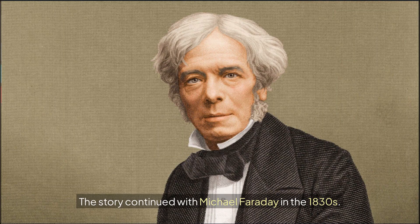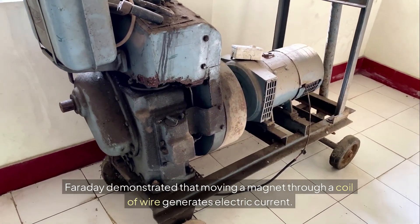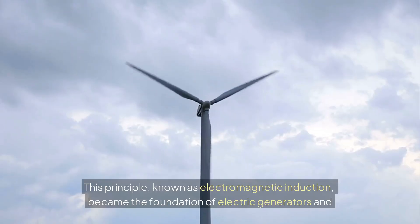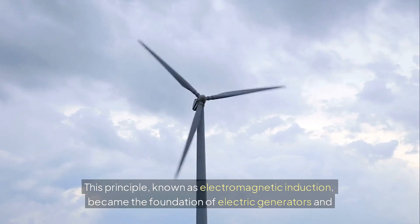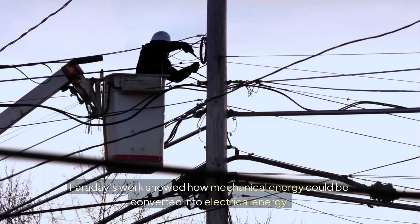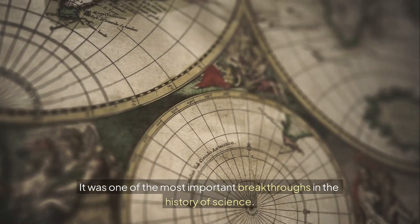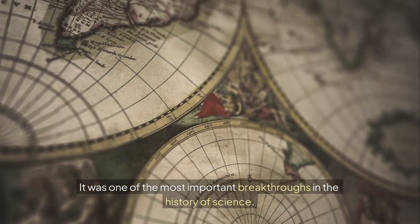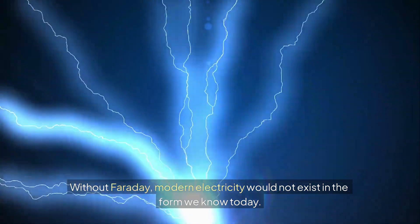The story continued with Michael Faraday in the 1830s. Faraday demonstrated that moving a magnet through a coil of wire generates electric current. This principle, known as electromagnetic induction, became the foundation of electric generators and transformers. Faraday's work showed how mechanical energy could be converted into electrical energy. It was one of the most important breakthroughs in the history of science. Without Faraday, modern electricity would not exist in the form we know today.